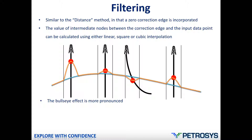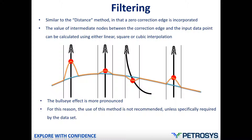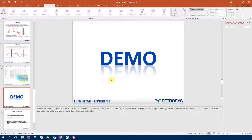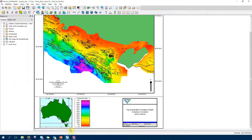There is a potential problem with the filtering method: it can produce more pronounced bullseye effects. For this reason we do not recommend this method unless it is specifically required by your data set. That's all the theory for today and let's go and see how it works live.